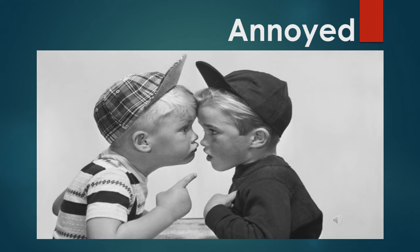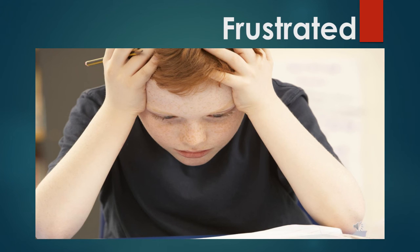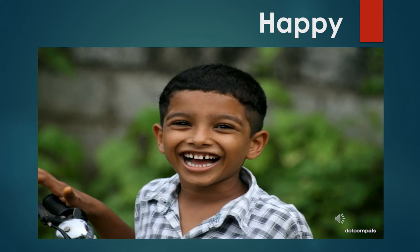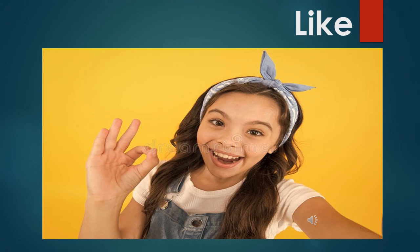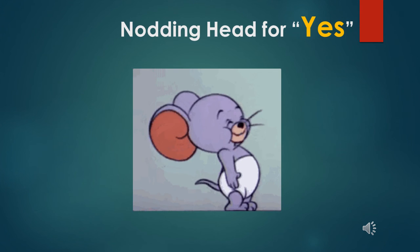This gesture is for showing an annoyed or angry mood. You can see that the boys are looking annoyed — just look at their facial expressions: they have lowered their brows, firmly pressed their lips, and bulged their eyes. This gesture shows frustration — it shows that a person is upset. This expression shows a happy mood — a smile on the face or a laughing boy shows that he is in a happy mood.